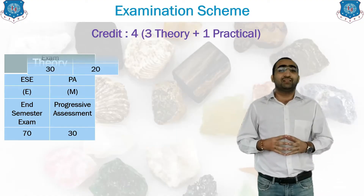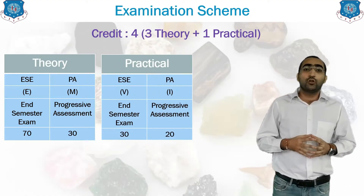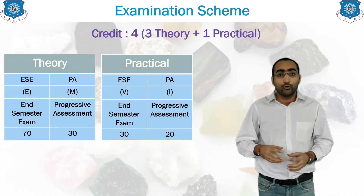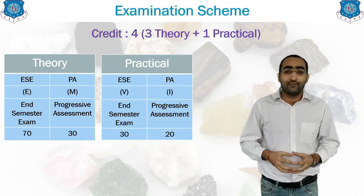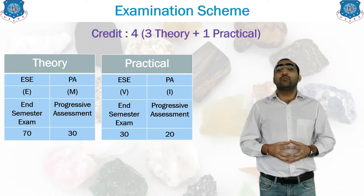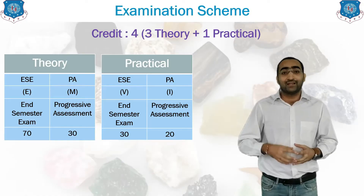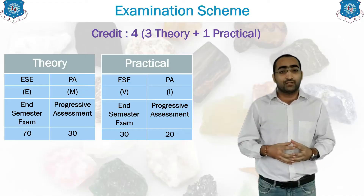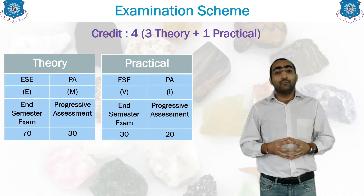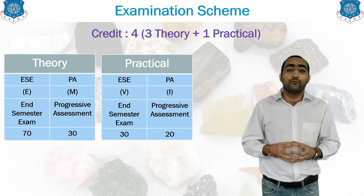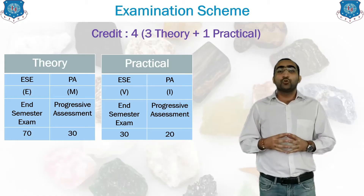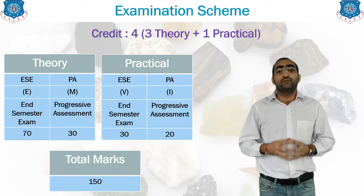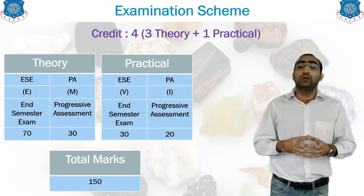The second portion is the practical portion. It also has two parts — the ESE, that is the VIVA portion, which is taken for 30 marks, and the PA, that is the Progressive Assessment, which is of 20 marks, covering how you perform the practicals in the lab. In short, by taking all these things together, there are a total of 150 marks for this particular subject.